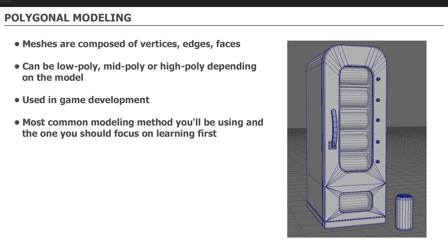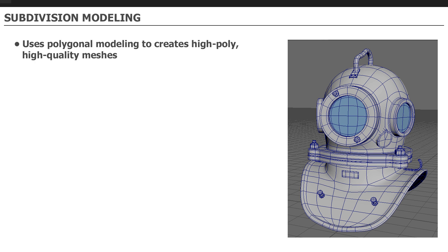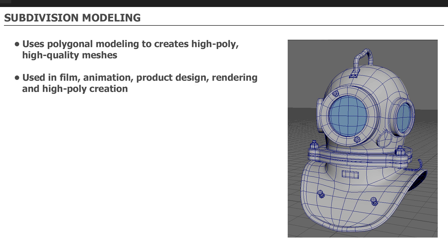The second modeling method you'll often come across is Subdivision Modeling. Subdivision modeling is an offset of polygonal modeling — it uses polygonal modeling as its base to then create high poly, high quality meshes. You begin from polygonal shapes, using the same cubes, cylinders, and spheres. The end result is different though. Subdivision modeling is primarily used in film, animation, product design, rendering, and high poly creation.